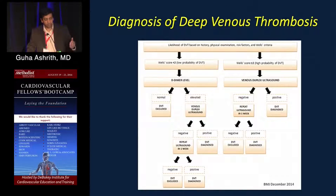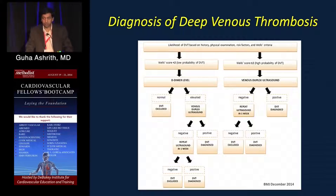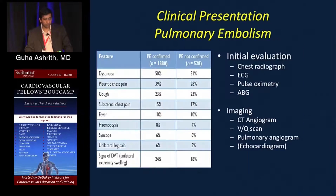Based on pretest probability — low or high — you choose your test: D-dimer or venous duplex. If you have a negative venous duplex, repeat another ultrasound, especially if pretest probability is intermediate to high. With two negative ultrasounds, DVT is ruled out.